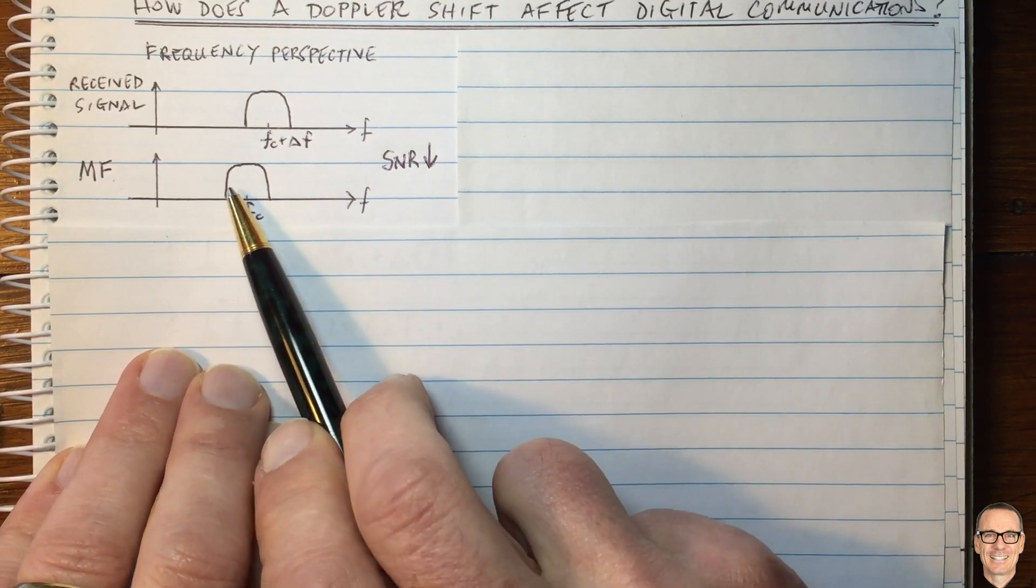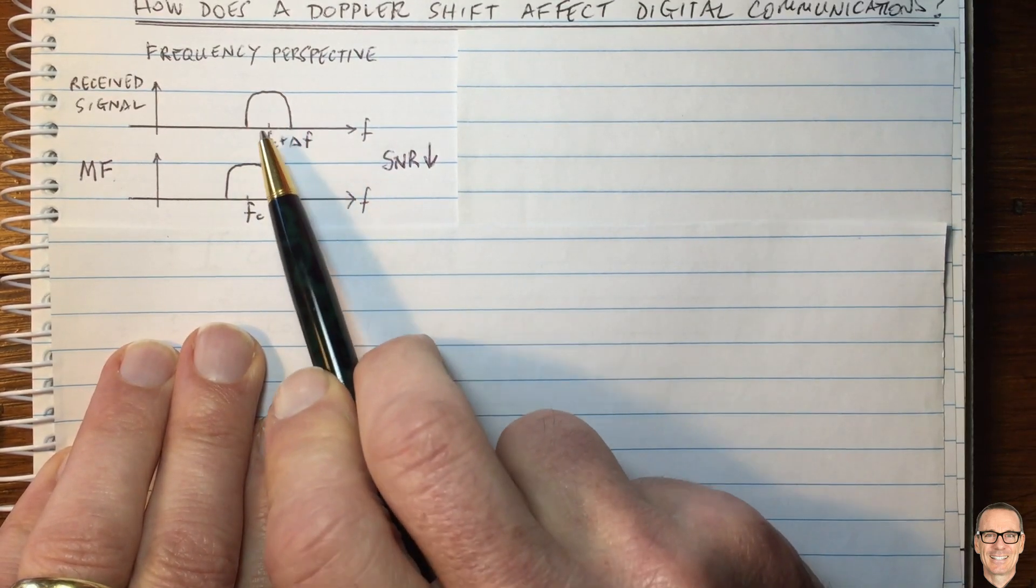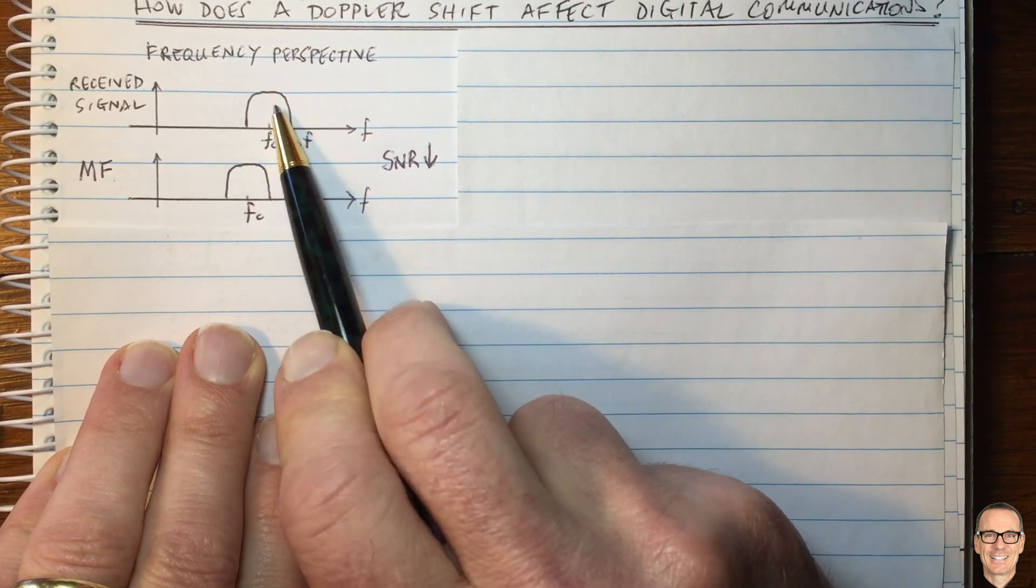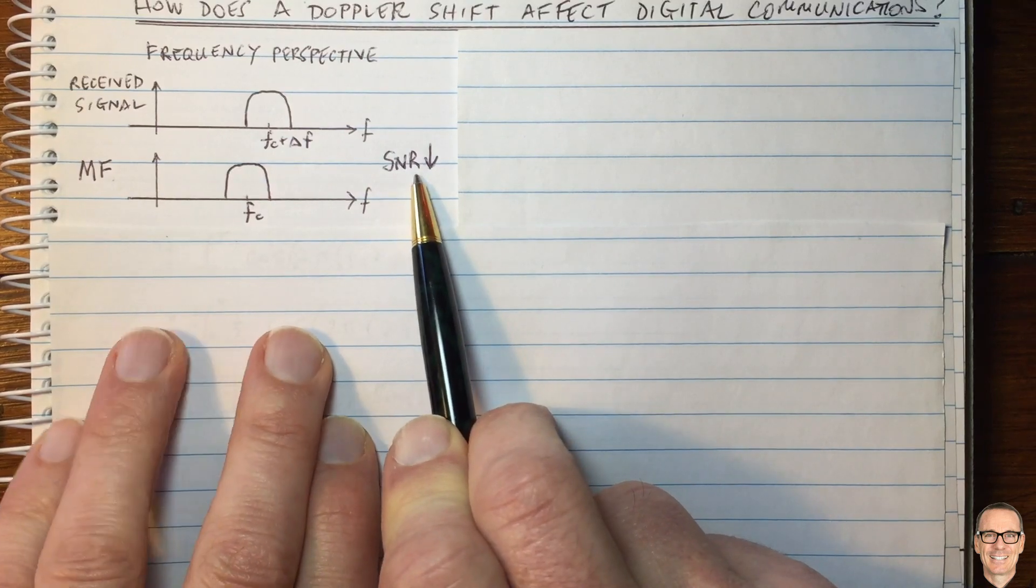And so the result is the signal-to-noise ratio will be going down as a result of the Doppler shift. The noise power will remain the same because the bandwidth is the same across the matched filter, but the component that comes through that filter from the received signal will be much less. So there'll be a loss in signal-to-noise ratio.